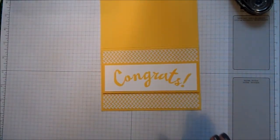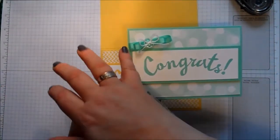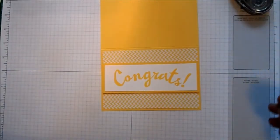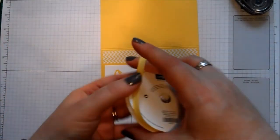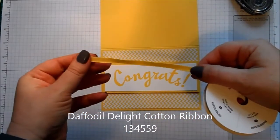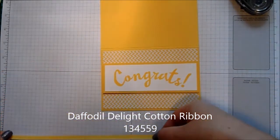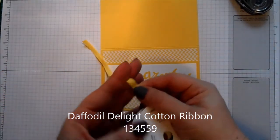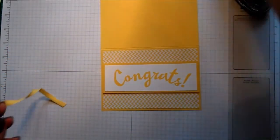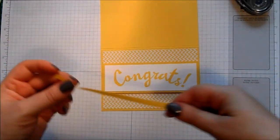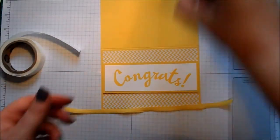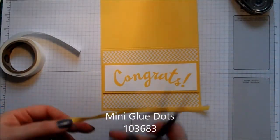So for the embellishment I'm going to put on, you can see here I've used some ribbon and one of our clear faceted buttons. So I've got some Daffodil Delight cotton ribbon. I'm going to take about 10 inches I think, and we need some glue dots. Now if we just cut that in half actually.